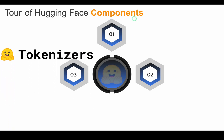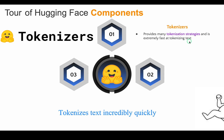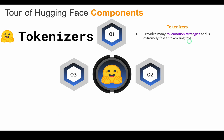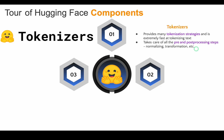The first component is Hugging Face Tokenizers. It offers a wide variety of tokenization techniques thanks to its Rust backend, and tokenizes text incredibly fast. Additionally, it handles all the preprocessing and post-processing tasks, including normalizing the inputs and formatting or transforming the model outputs according to the tasks you are solving. You can load a tokenizer using Hugging Face Transformers in the same manner that Hugging Face Transformers can load pre-trained model weights.